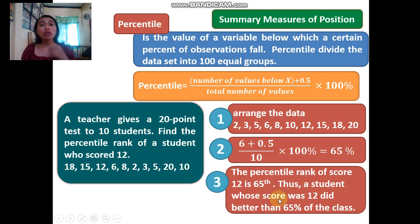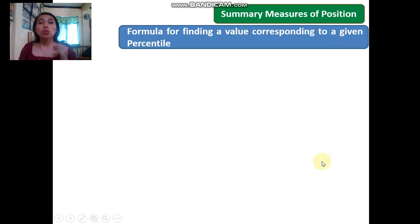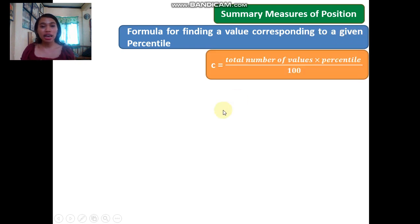Thus, a student who scored 12 did better than 65% of the class. Now, what if you're given the percentile and need to find the score? This is the reverse. The formula for finding the value corresponding to a given percentile is: C equals (total number of values times percentile) divided by 100.